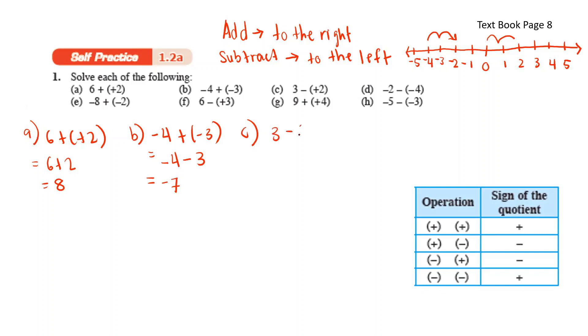3 minus positive 2. Positive and negative, you get negative. 3 minus 2 is 1.